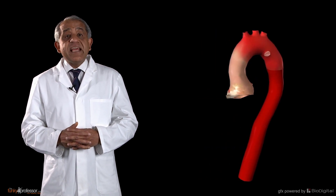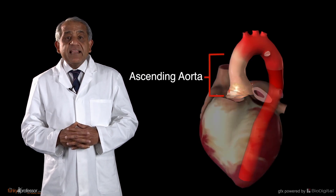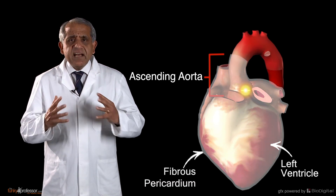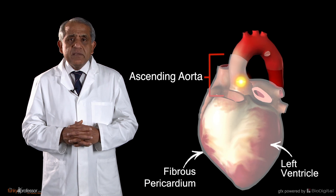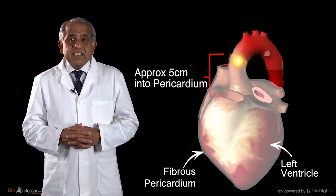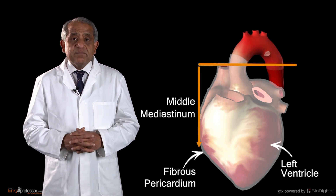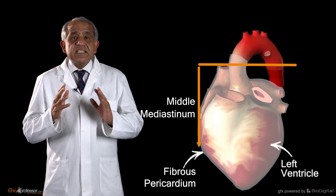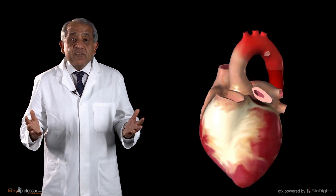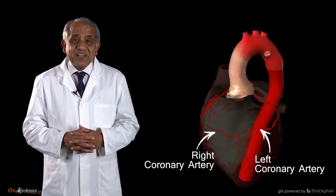Let's start with the ascending aorta. It commences at the orifice between the left ventricle and the aorta. It runs entirely within the fibrous pericardium for a distance of about 5 or 6 cm. Being in the fibrous pericardium, it is entirely in the middle mediastinum. The ascending aorta has just two branches, and these arise at the aortic root — the right and left coronary arteries.